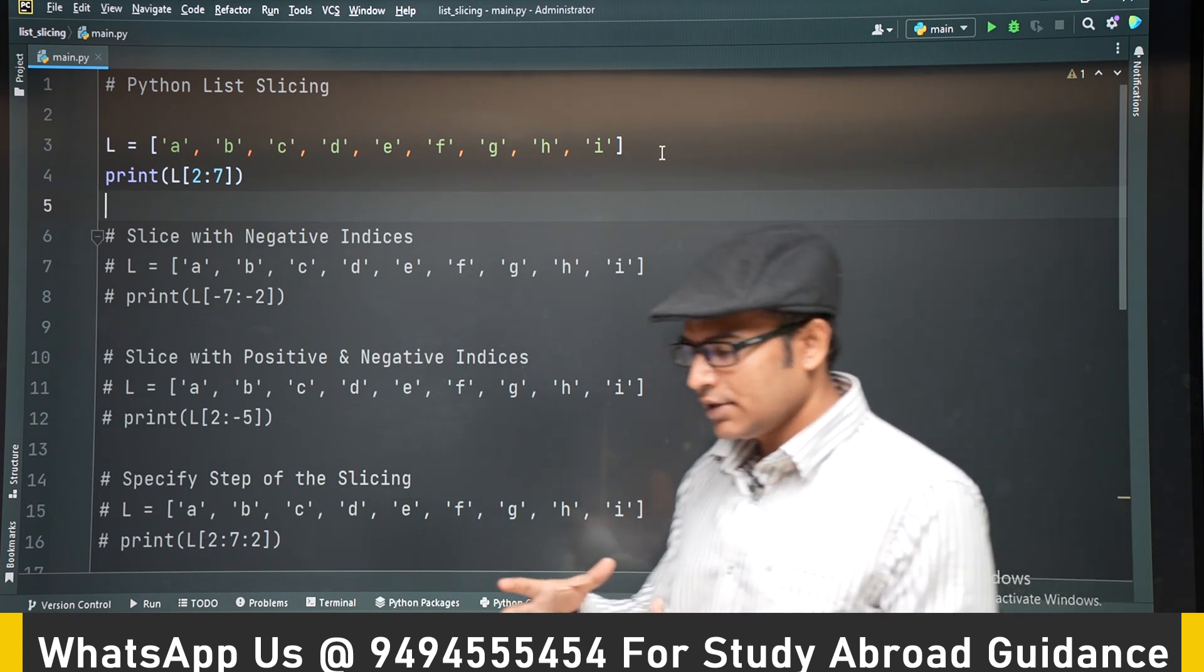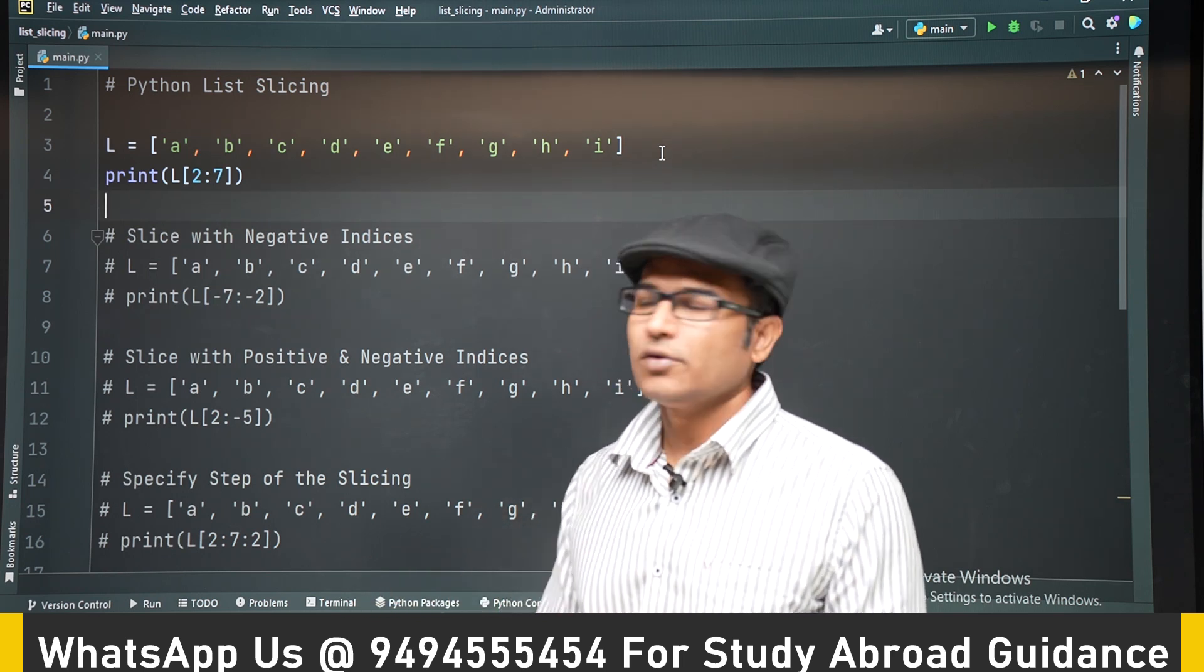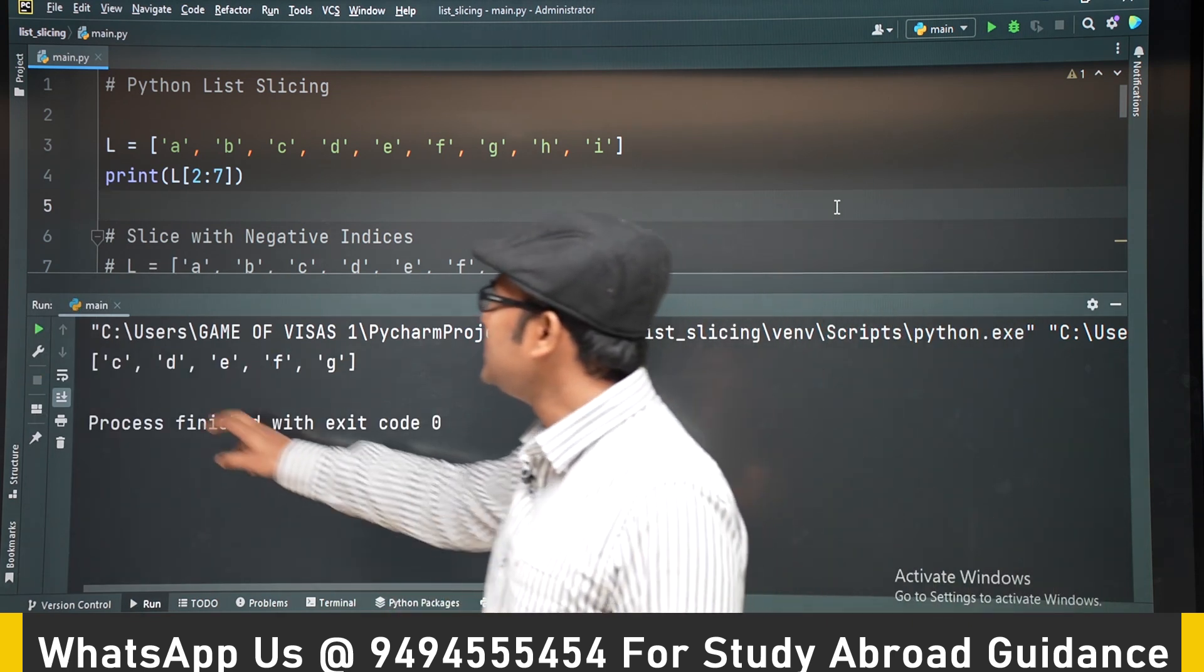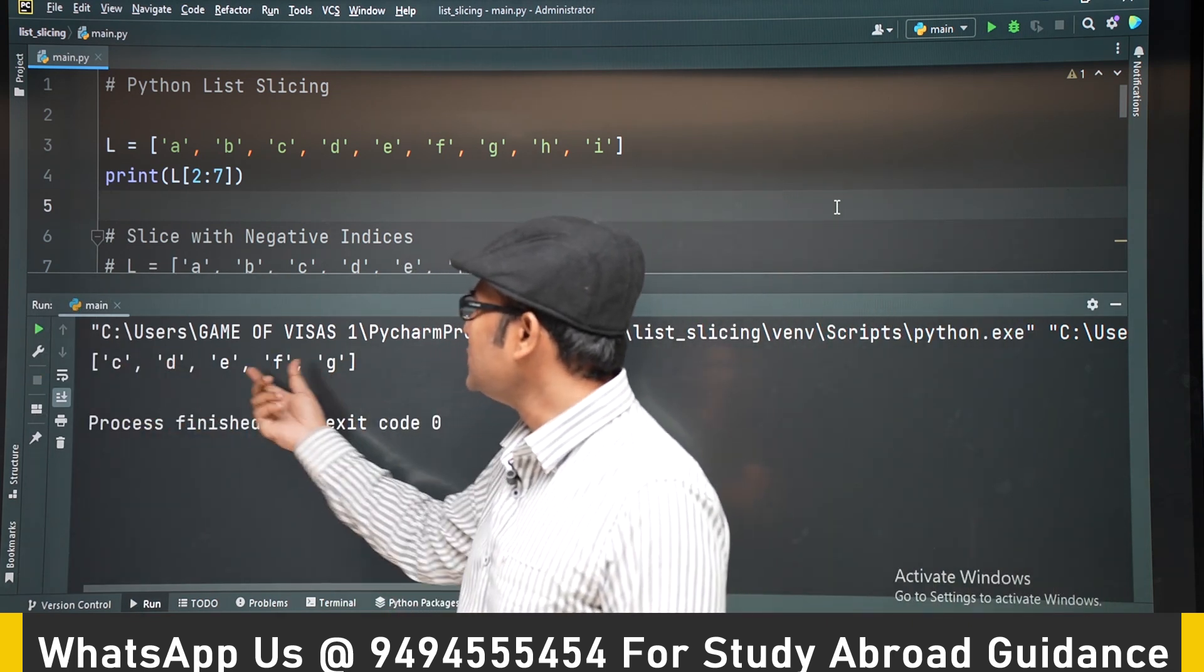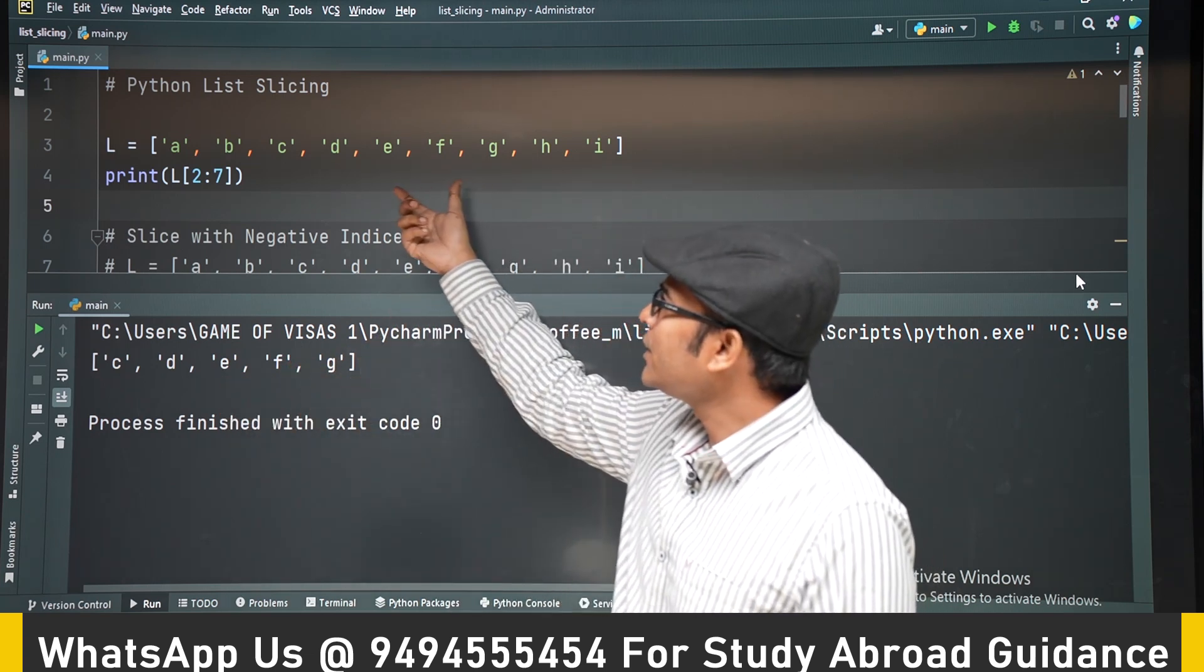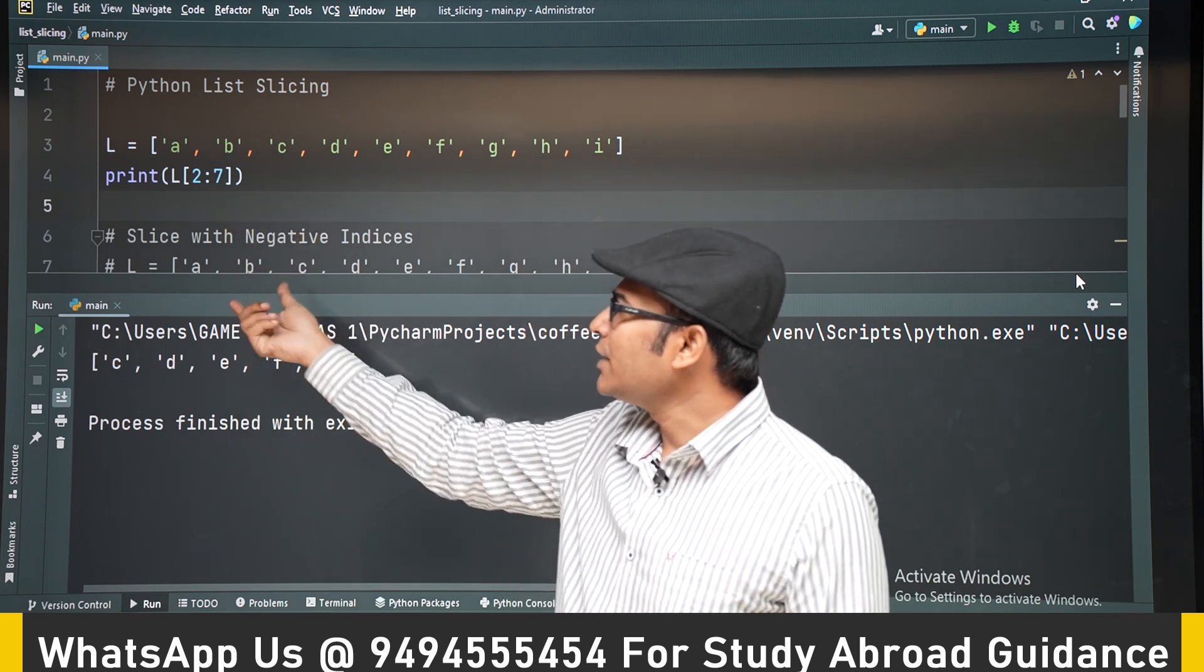The last end index whichever you are giving, we will not go till that point. Now if I write it, you can see that from C till G is given as a list.